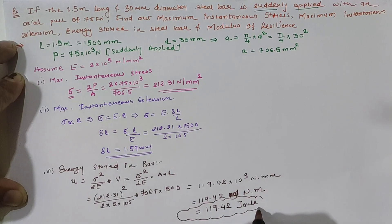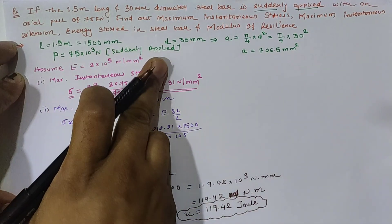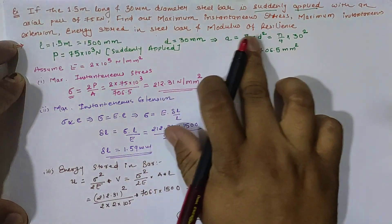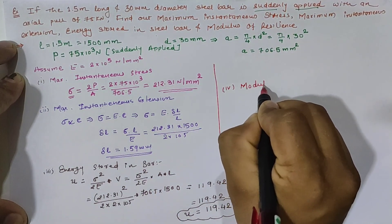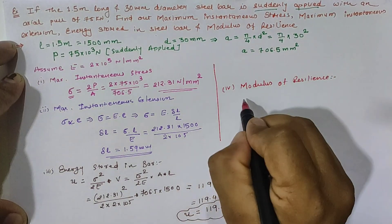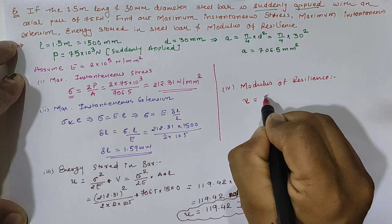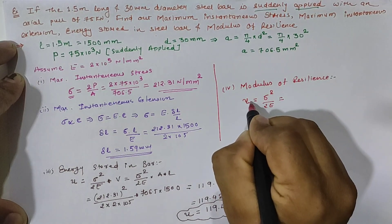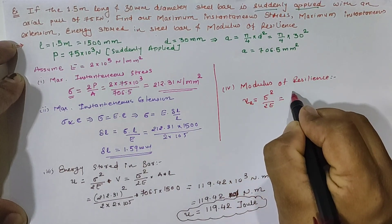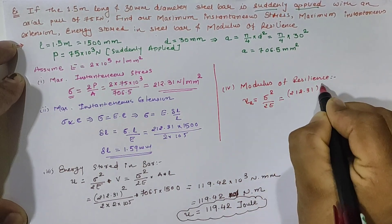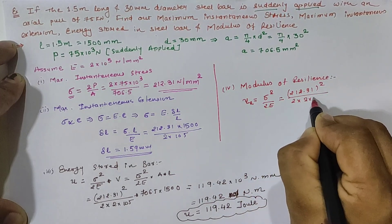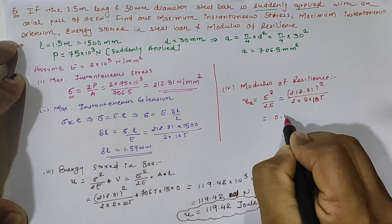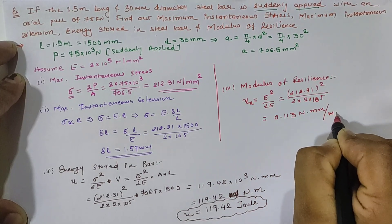So the energy stored in the bar for 75 kilo newton suddenly applied load is 119.42 newton meter. Now for the modulus of resilience, it is calculated as U equals sigma squared divided by twice the modulus of elasticity — that is 212.31 squared divided by 2 into 2 into 10 raised to 5 newton per mm square. Hence our modulus of resilience is 0.113 newton mm per mm cube.